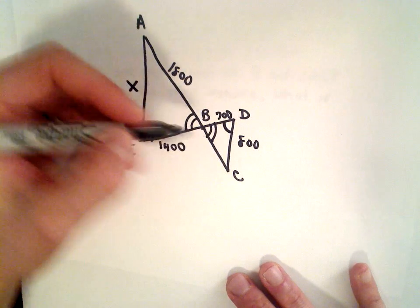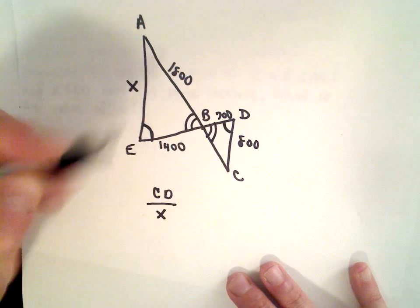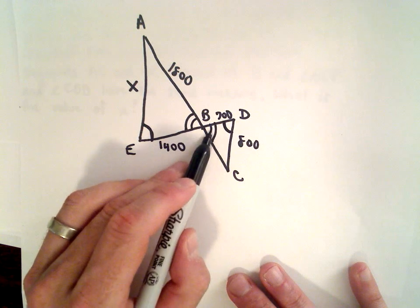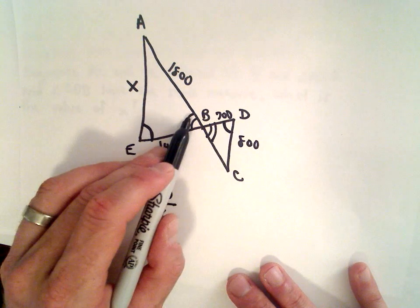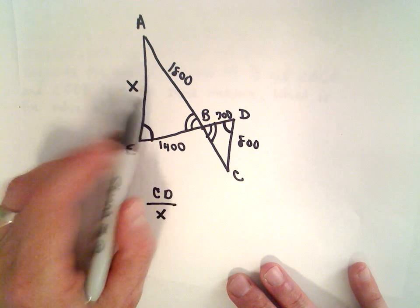We can say that CD divided by x—so again, I'm kind of looking at this angle, the side opposite that is CD, and for this triangle I'm looking at the same angle but the opposite side, that's x.